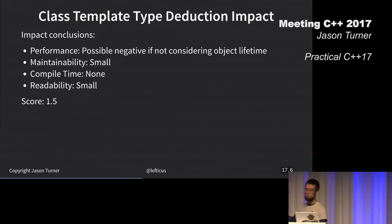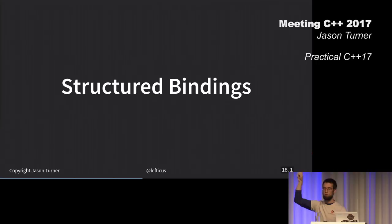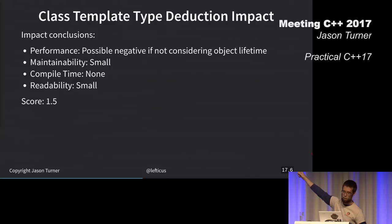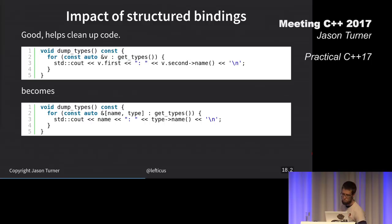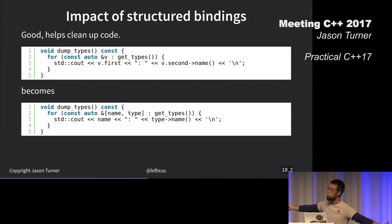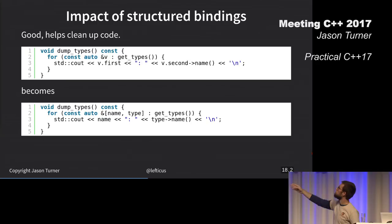Structured bindings is next on my list. I said possibly negative performance, score of 1.5. Structured bindings are cool. They let us do this. This is better, right? We don't have to have this obtuse V dot first and V dot second. We can actually know what these things are, the name and our type. This is like real code from ChaiScript, effectively.